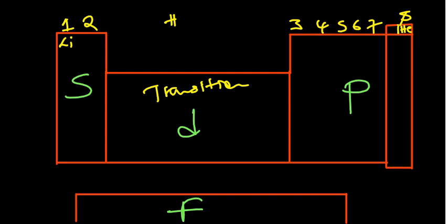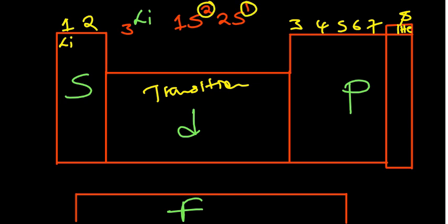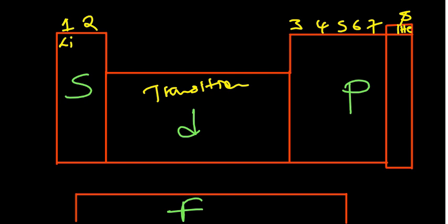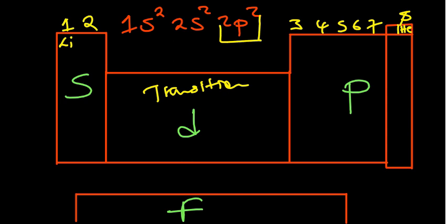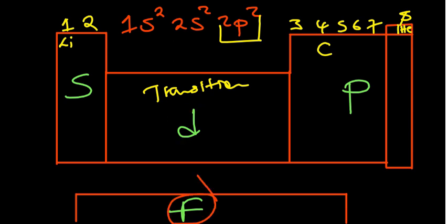For example, lithium has atomic number three. Its electron configuration has two electrons in the first s orbital and one in the second s orbital, so its outermost orbital is s, placing it in the s block. Carbon has six electrons: 1s² 2s² 2p². The outermost orbital is p, so carbon is in the p block. The same applies to transition elements, whose outermost orbital is d.